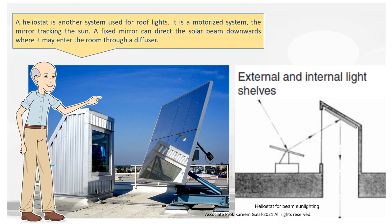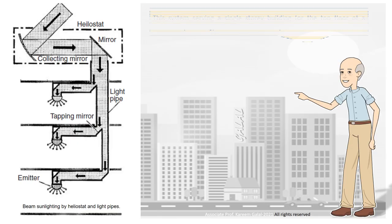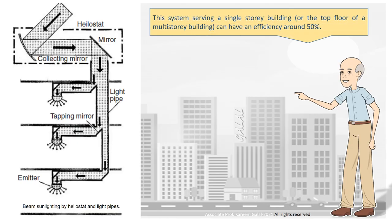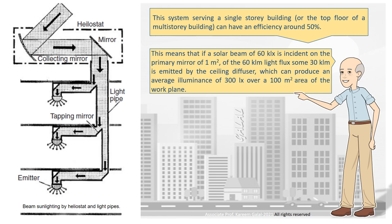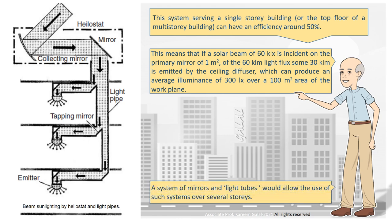A heliostat is another system used for rooflights. It is a motorized system with a mirror tracking the sun. A fixed mirror can direct the solar beam downwards where it may enter the room through a diffuser. This system, serving a single-story building or the top floor of a multi-story building, can have an efficiency around 50%. This means that if a solar beam of 60 KLX is incident on the primary mirror of one square meter, of the 60 KLM light flux some 30 KLM is emitted by the ceiling diffuser, which can produce an average illuminance of 300 LX over a 100 square meter area of the work plane.